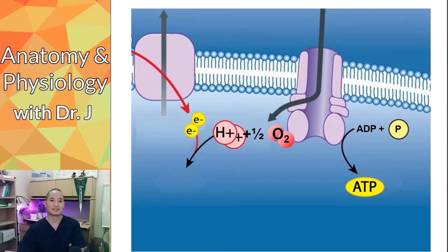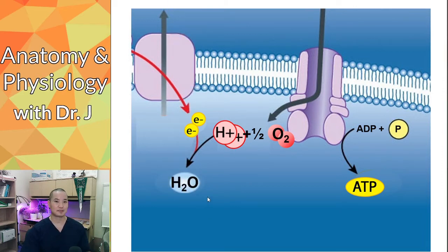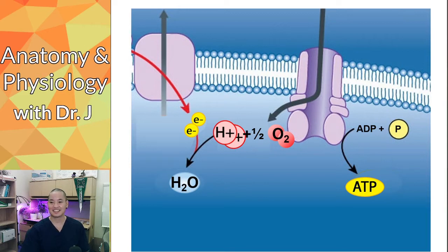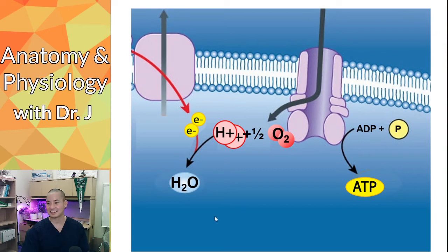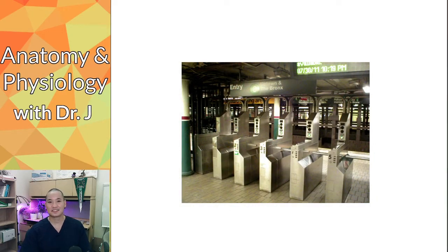Now, where does water fit in as a product of cellular respiration? This is where oxygen gets used. The protons combine with oxygen and the spent electrons from the electron transport chain to make new water molecules. There's actually a desert rodent called the kangaroo rat that generates what we call metabolic water — not from drinking, but through metabolism and the electron transport chain — allowing it to maintain water stores by generating water through chemical reactions.